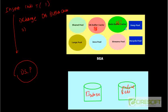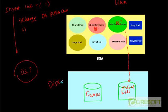Then there is a background process called log writer, or LGWR. What LGWR is going to do is write those redo information to the online redo log file. This is your disk and this is your RAM. So log writer is going to write your redo buffer cache information to the online redo log under the following four conditions.